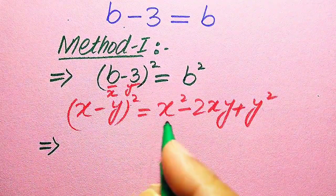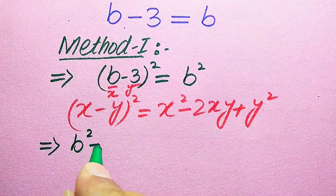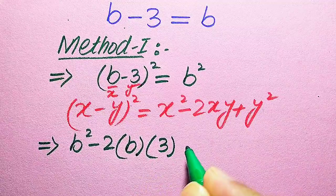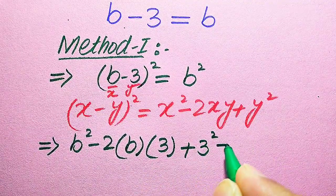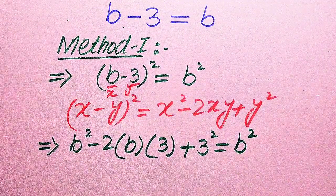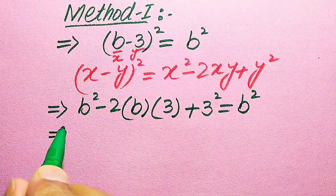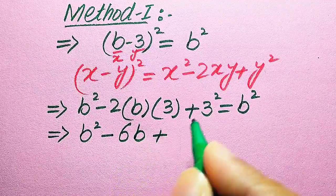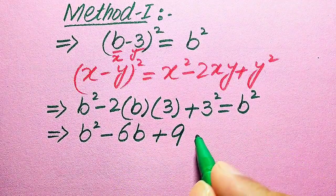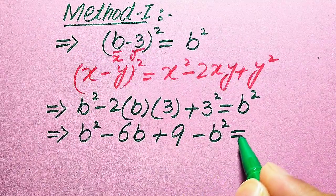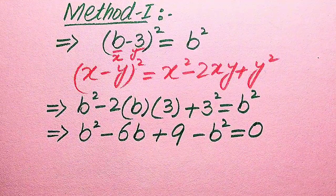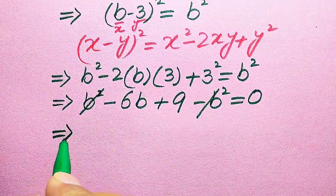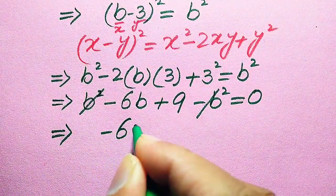Applying this formula, we expand the left-hand side: b² − 2(b)(3) + 3² = b², which becomes b² − 6b + 9 = b². Moving b² to the left-hand side gives minus b², and the b² terms cancel each other out, leaving us with −6b + 9 = 0.